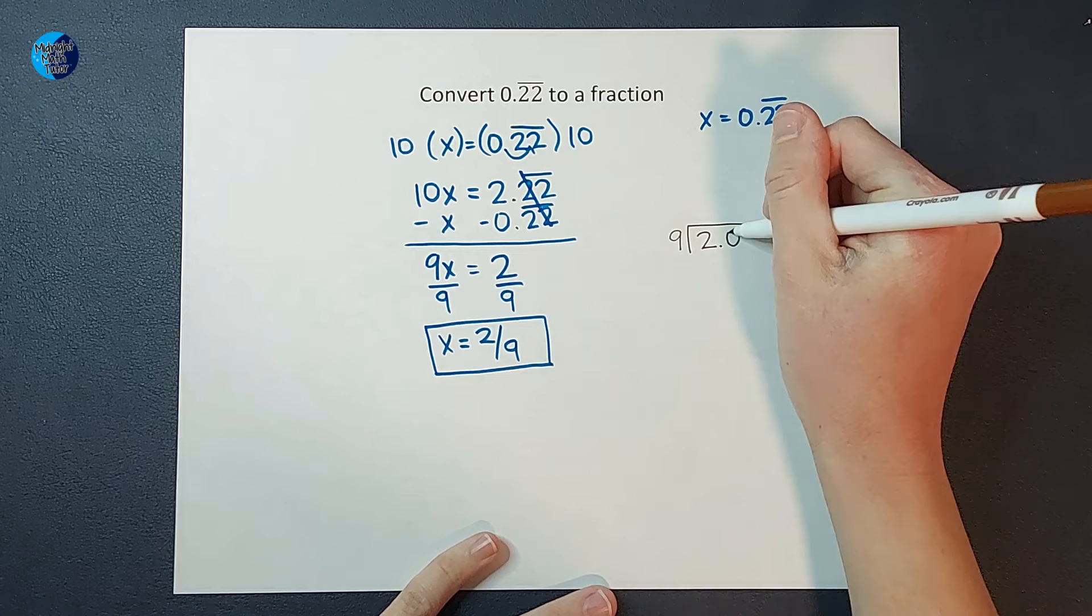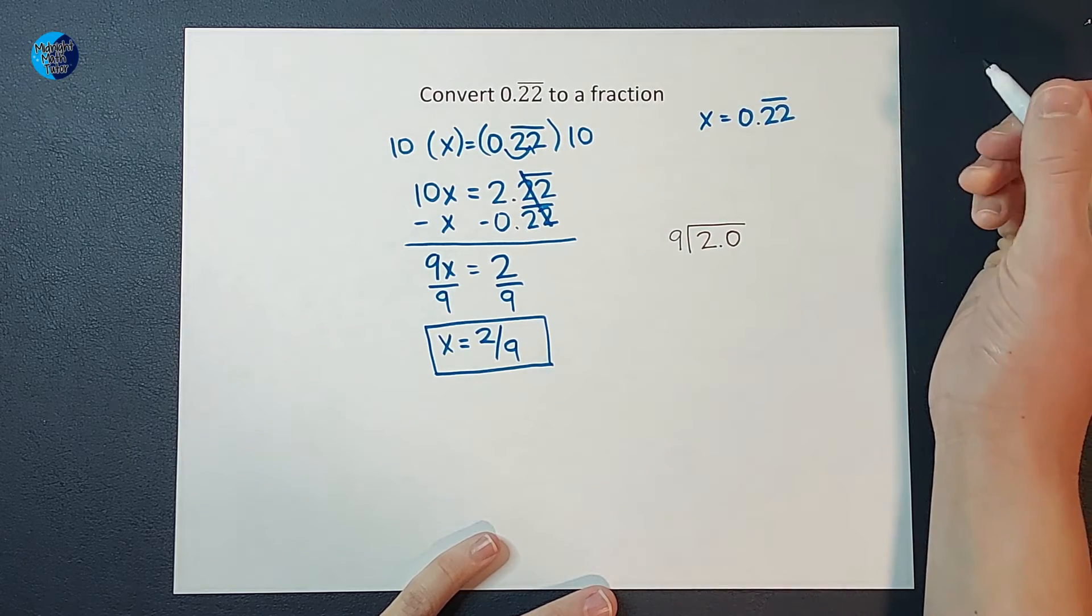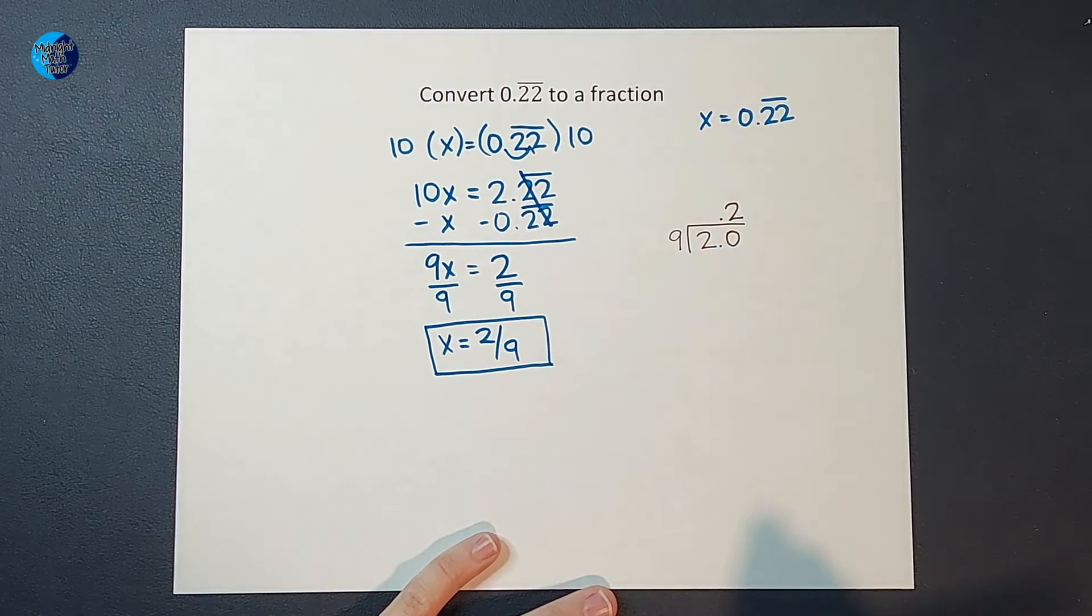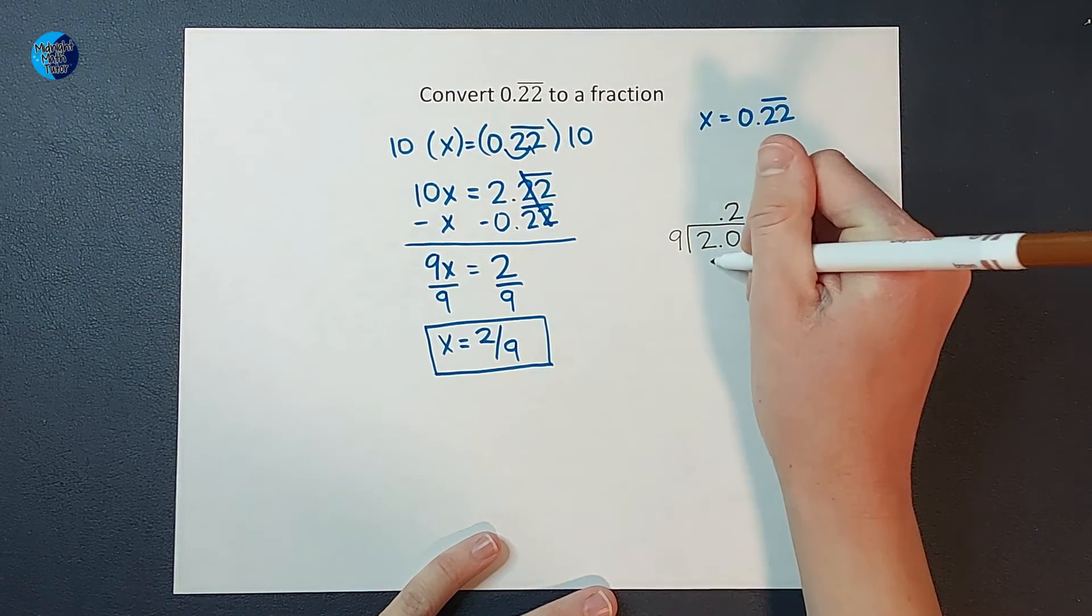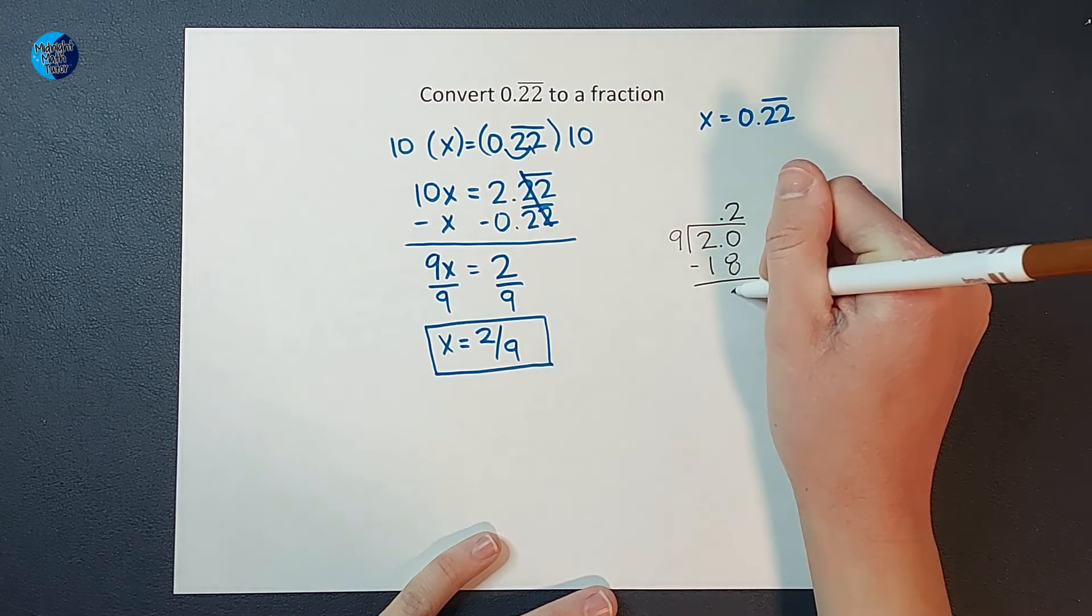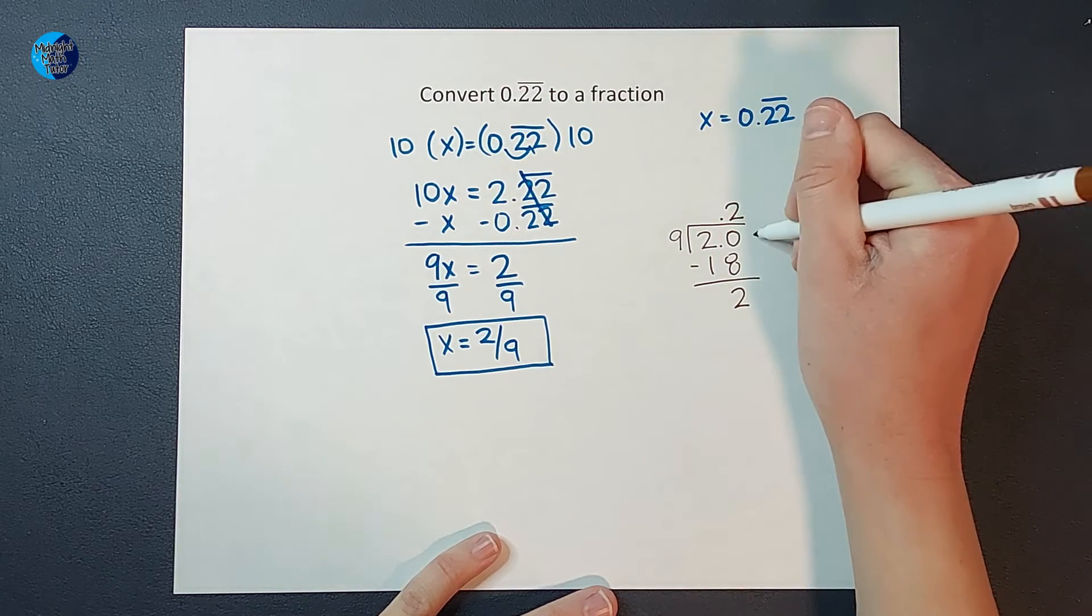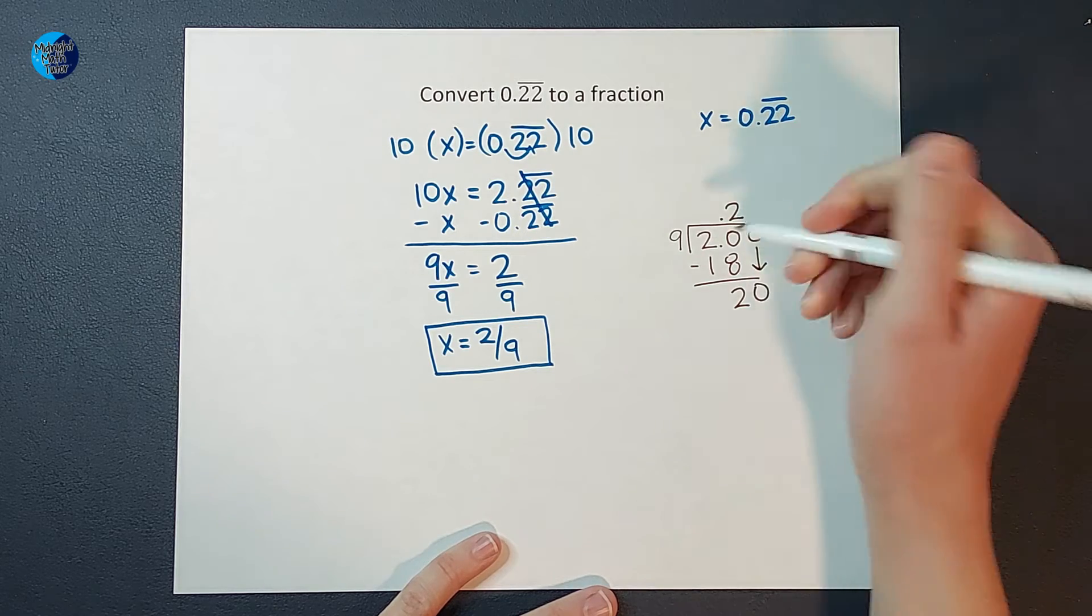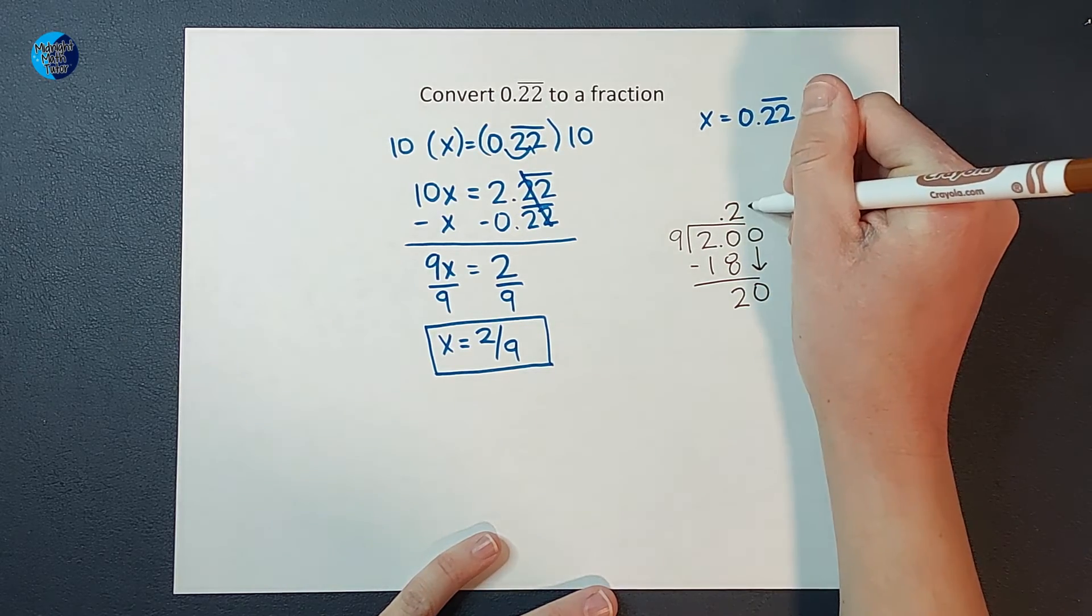But then I ask myself, well, how many times does 9 go into 20? It goes twice. And that decimal goes right there. 2 times 9 would give me 18. And when I subtract, I get 2. So since I have a remainder, I'm going to add a 0, bring that down. And I ask myself, how many times does 9 go into 20? Well, it goes twice.